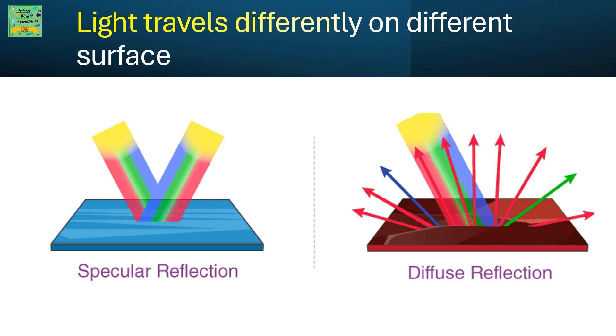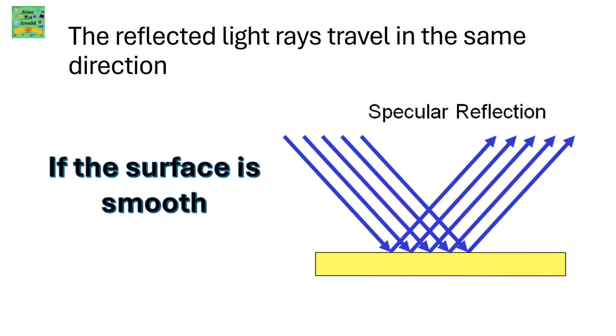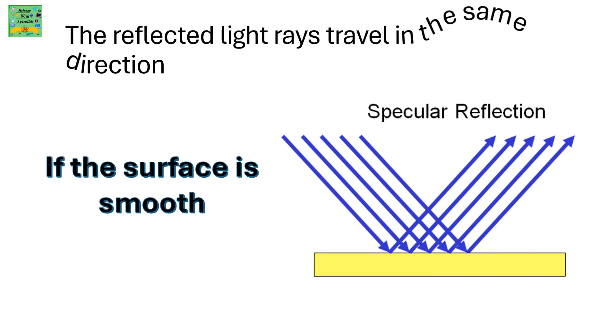Light travels differently on different surfaces. If there is a rough surface, the light travels in all directions. The reflected light rays travel in the same direction if the surface is smooth and it's called specular reflection.